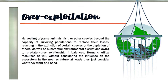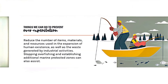The next topic is over-exploitation. What is over-exploitation? It is the harvesting of game, animals, fish, or other species beyond the capacity of the surviving population to replace their losses, resulting in the extinction of certain species, as well as substantial environmental disruption due to predator-prey relationship imbalances. Humans utilize resources at will without considering the influence on the ecosystem in the near future. To prevent over-exploitation: reduce the number of items, materials, and resources used in the expansion of human existence, as well as the waste generated by industrial activities.